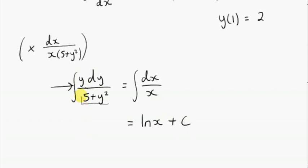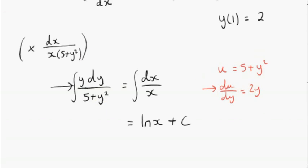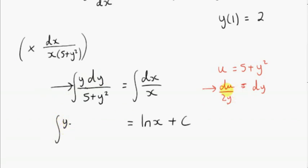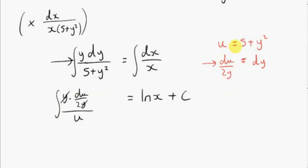What about this integral on the left? Notice that if we differentiate the denominator, we will get a constant multiple of the numerator, so that suggests a substitution. The substitution is got by letting u equal 5 plus y squared — getting the denominator into a single term. If we differentiate, du/dy equals 2y, or we can say du equals 2y dy. Actually, we can write du over 2y equals dy. So we substitute this in for dy. The left-hand side is going to become y times dy, which is du over 2y, divided by 5 plus y squared, which we're calling u. The y's cancel out, so the substitution has given us a much easier integral to handle.